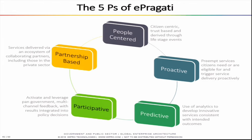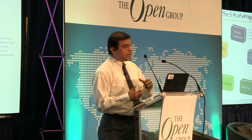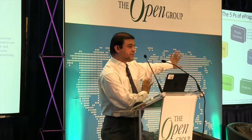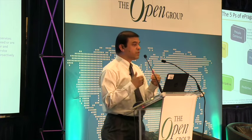The five P's of ePragati: services are people-centered; government becomes proactive and predictive; participative; and partnership-based. There is no need for government to deliver all services by itself — of the 72 projects, at least a third will be delivered on a PPP basis. One of the big learning points from a large mega enterprise architecture initiative is that you have to think about the funding model. As an architect you might say that's for the finance guys — no, you have to think of the funding model because that's what governments are going to ask of you.